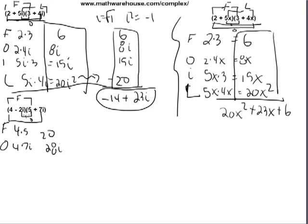The inner, which is negative 2i times 5, which gives you negative 10i. And the last, negative 2i times 7i, which is negative 14i squared.